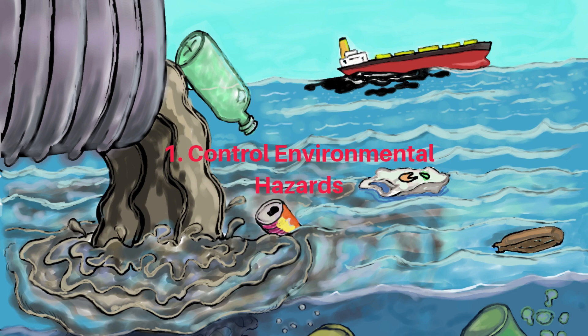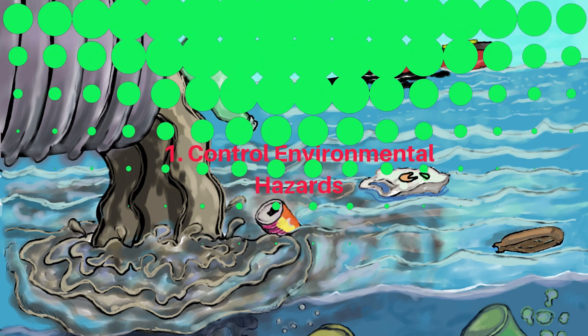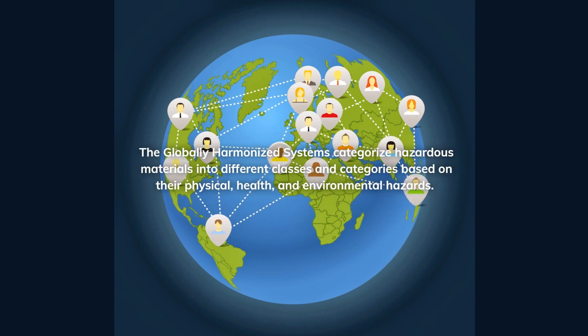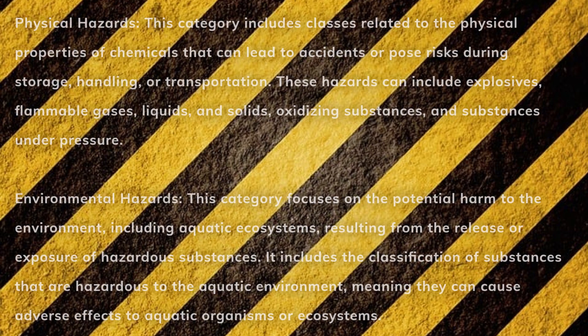We are going to start with the control of environmental hazards. The globally harmonized systems categorize hazardous materials into different classes and categories based on their physical, health, and environmental hazards. One, we have physical hazards. This category includes classes related to physical properties of chemicals that can lead to accidents or pose risk during storage, handling, or transportation. These hazards can include explosives, flammable gases, liquids, and solids, oxidizing substances and substances under pressure.